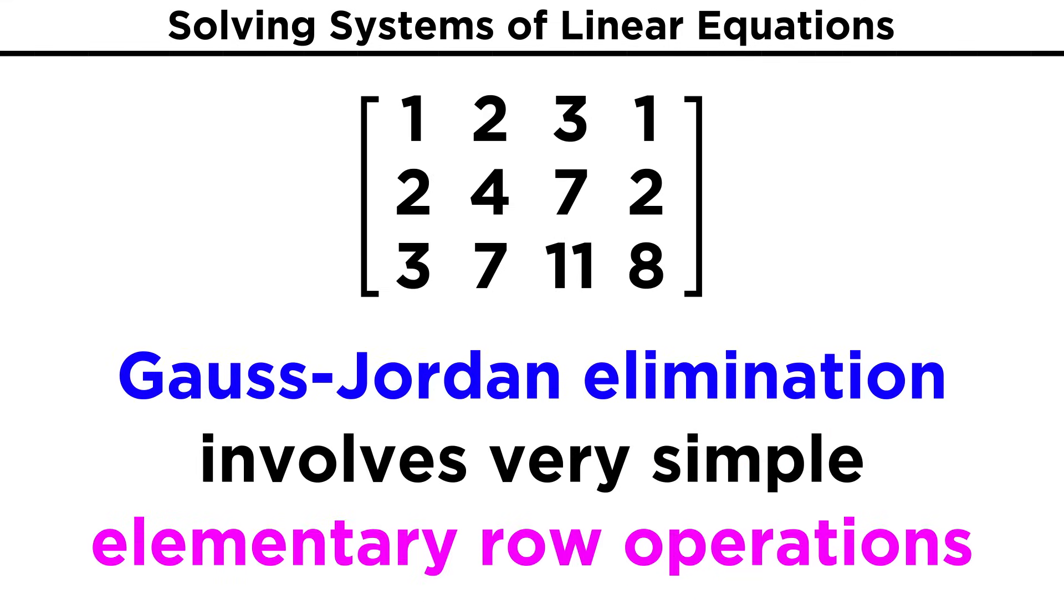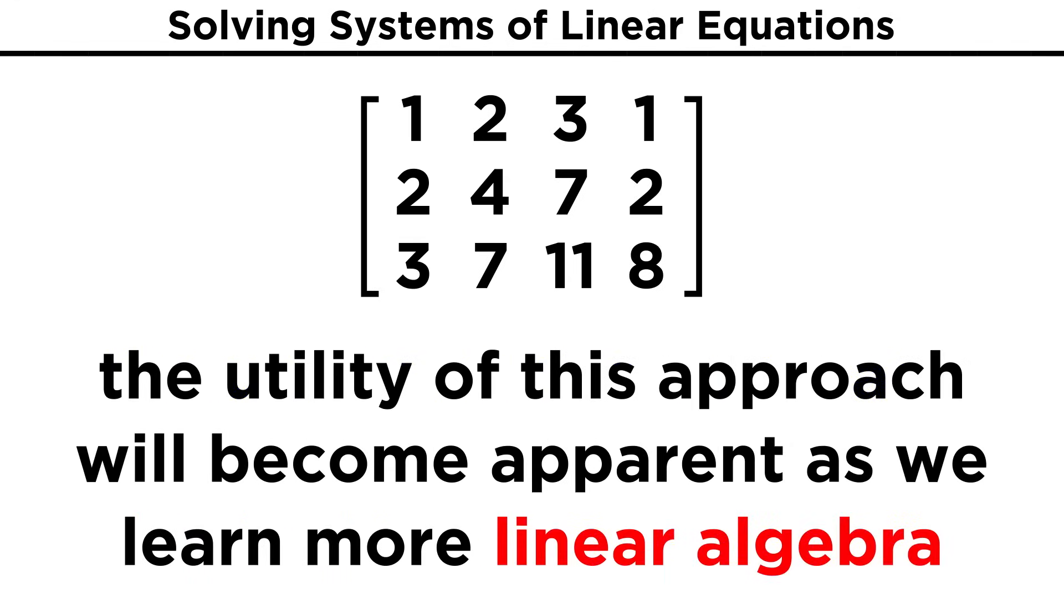So as we can see, elementary row operations are no different than what we learned in algebra, it is just that we are applying them to a matrix and getting a solution for the system that does not require manipulating equations by using Gauss-Jordan elimination. This may seem arbitrary right now, but as we proceed through linear algebra, we will learn about all kinds of things we can do with matrices, so let's move forward and continue expanding our understanding of these right after we check comprehension.